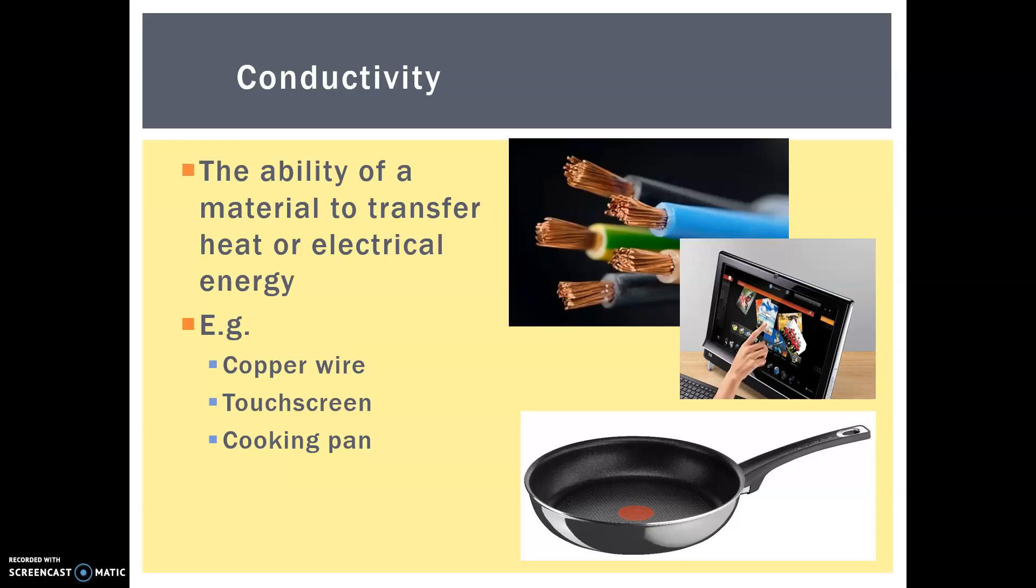Cooking pans, of course, are very thermally conductive. And some of the best cookware in the world is actually made of copper. So copper is conductively and electrically conductive. And of course, the opposite of a conductor is an insulator.